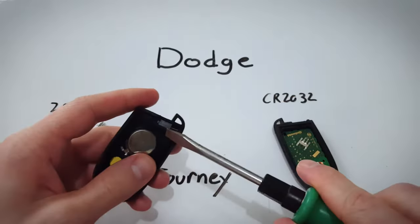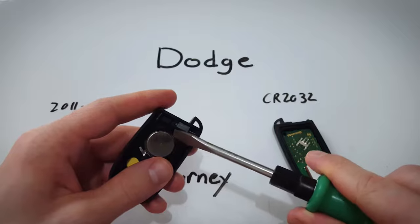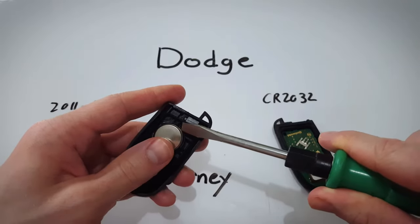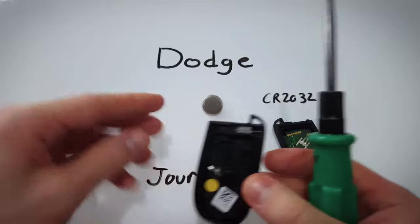Now we can just go under with our flathead screwdriver or our fingernail and just kind of lift up the battery and it will pop out like that.